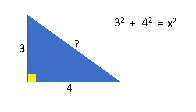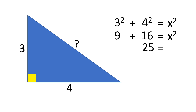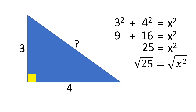So, 3 squared is 9 plus 4 squared is 16, which is equal to X squared. Let's combine 9 and 16; that is 25, which is equal to X squared. Then take the square root of both sides. The square root of 25 is 5, which is equal to the square root of X squared, which is X.